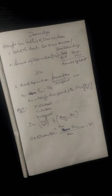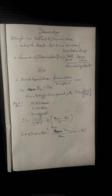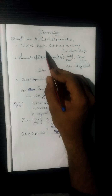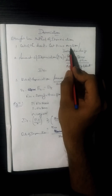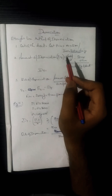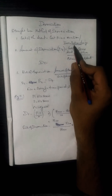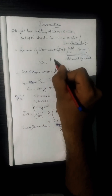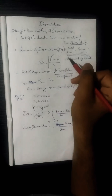Let's look at the straight line method of depreciation. The cost of the asset includes the purchase price plus installation charges. The amount of depreciation, dT, is equal to the cost of the asset minus the scrap value, divided by the estimated life of the asset. So dT equals P minus F divided by n.